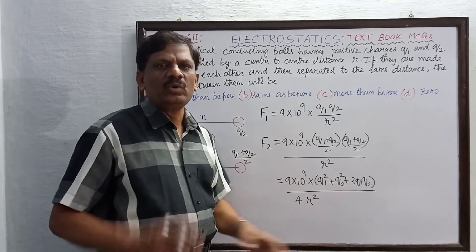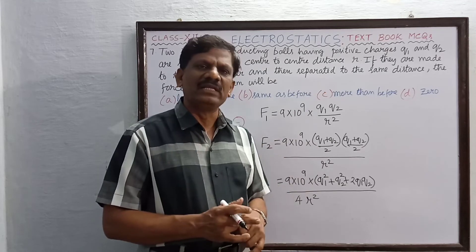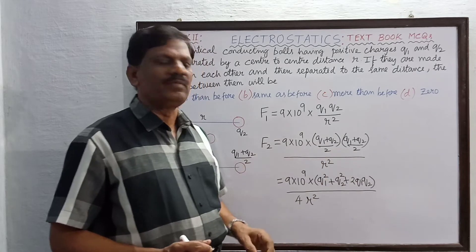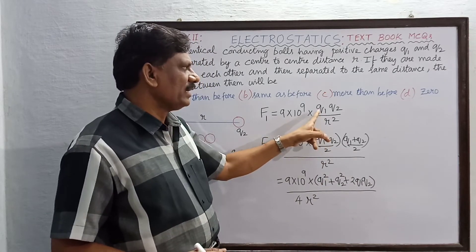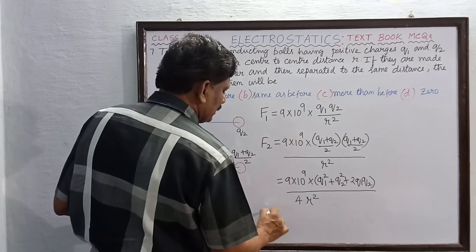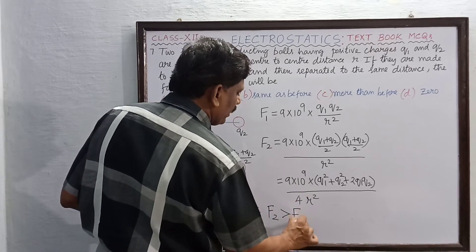For q1 and q2 having different values, any other value, q1 square plus q2 square plus 2 into q1q2 is found to be greater than the previous case, greater than q1q2 by r square. Therefore, F2 is found to be greater than F1.